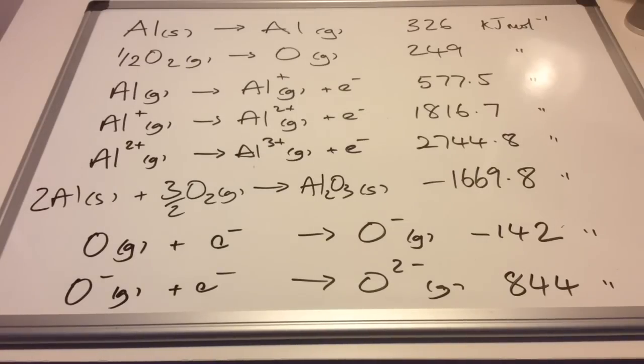On the screen we've got the enthalpy changes needed to calculate the lattice enthalpy for aluminium oxide. I'll run through all of these and then you can have a go at constructing the Born-Haber cycle and actually calculating the value for the lattice enthalpy.